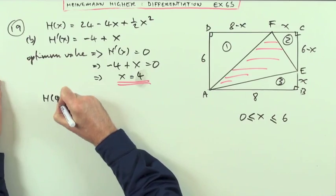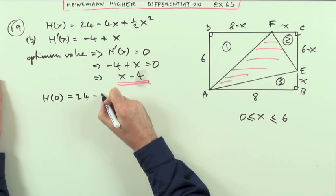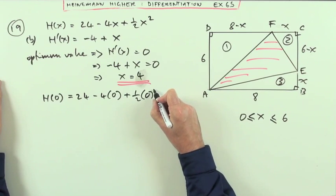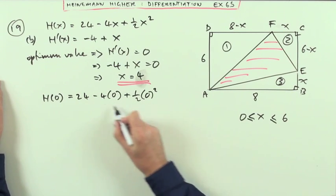The numbers will speak for themselves. What's the value when X is 0? Well, that'll be 24 minus 4 times 0 plus a half of 0 squared. A lot of writing out just to get 24.